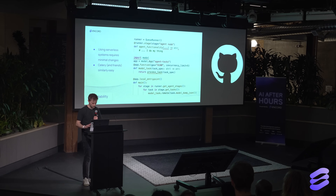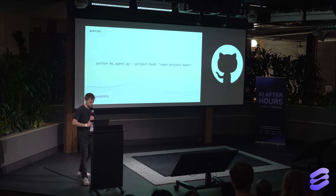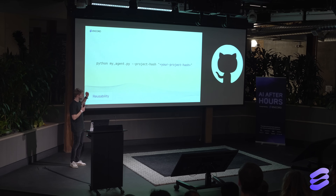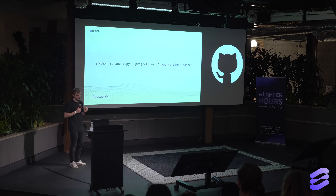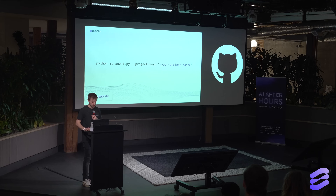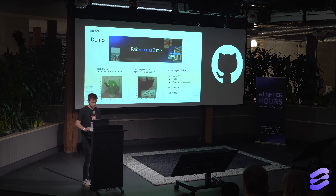Finally, we wanted to make it reusable. If you want the same type of agent nodes in your workflows, you can reuse the same thing and just point it to the right project. So when I want to do iteration one, two, and three — where maybe I pre-label, maybe I filter — I can just swap out the project and off we go. That's what we built.